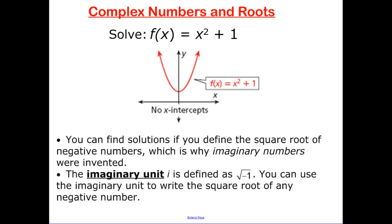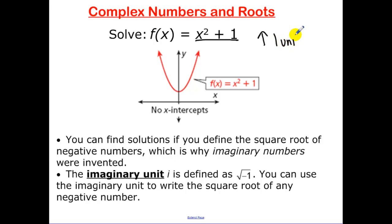Today we're going to be talking about complex numbers and roots. This goes back to what we were talking about a few lessons ago. If we have the equation f(x) = x² + 1, you know from your transformations that the vertex is up one unit. So when you're looking at the graph, you're not going to have any x-intercepts — and remember, x-intercepts were solutions to our equation.